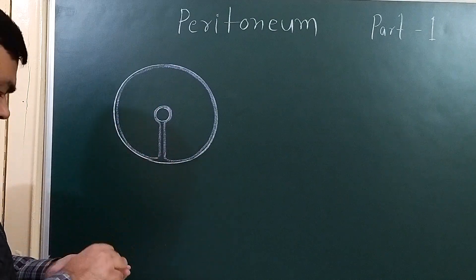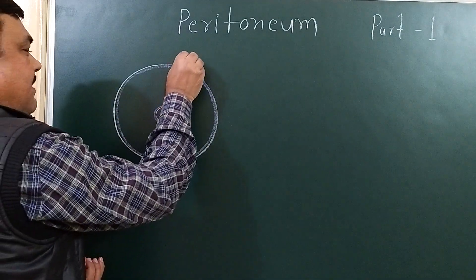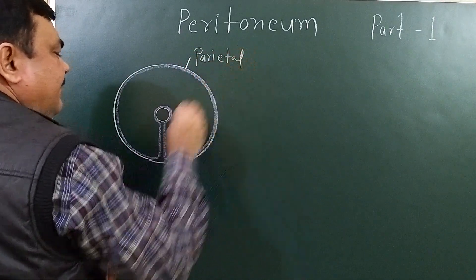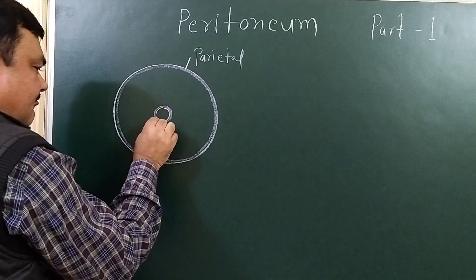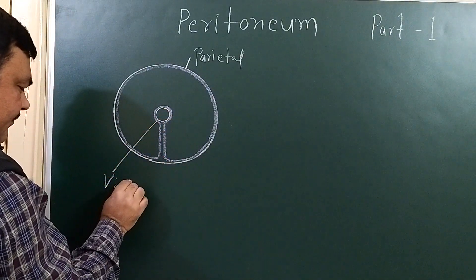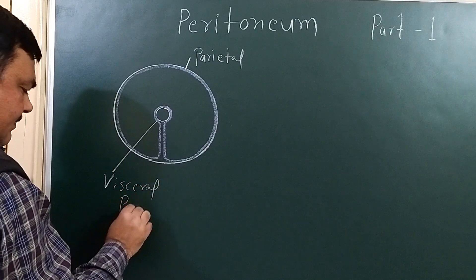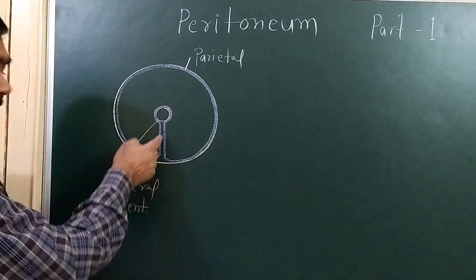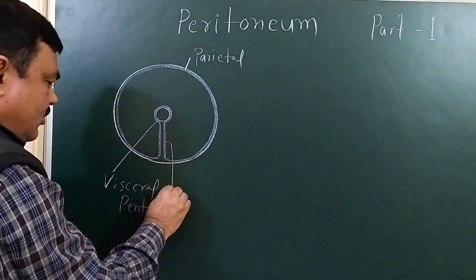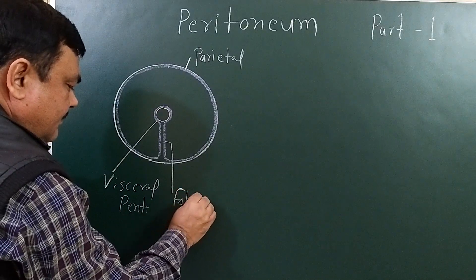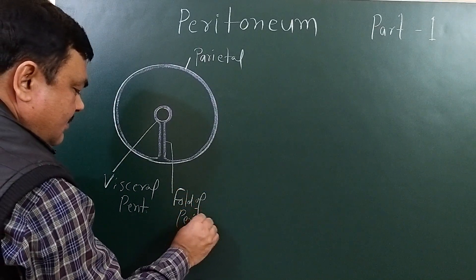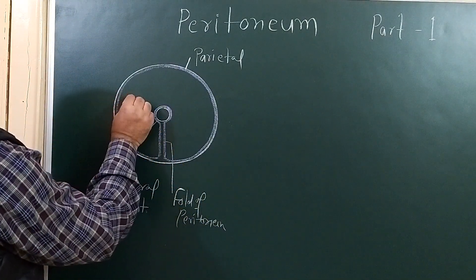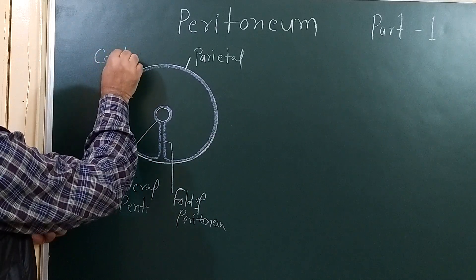Here, this part is parietal peritoneum. And this part is visceral peritoneum. And this is a fold of the peritoneum. And this is the cavity of the peritoneum — our peritoneal cavity.